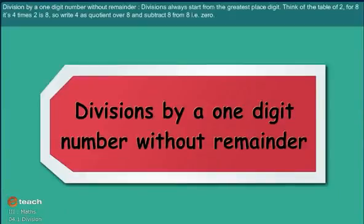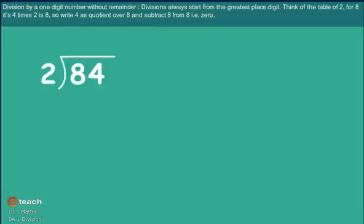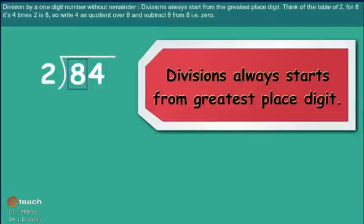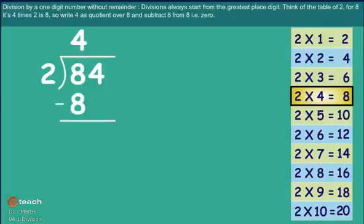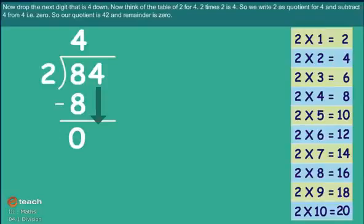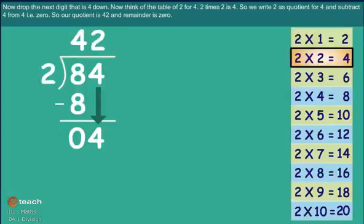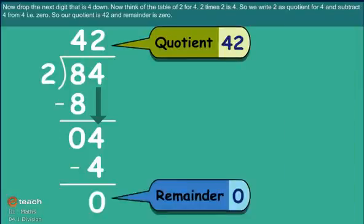Division by a one-digit number without remainder. Division always starts from the greatest place digit. Think of the table of 2: for 8, it's 4 times 2 equals 8, so write 4 as the quotient over 8 and subtract 8 from 8 to get 0. Drop the next digit 4 down. 2 times 2 is 4, so write 2 as quotient for 4 and subtract 4 from 4 to get 0. So the quotient is 42 and the remainder is 0.